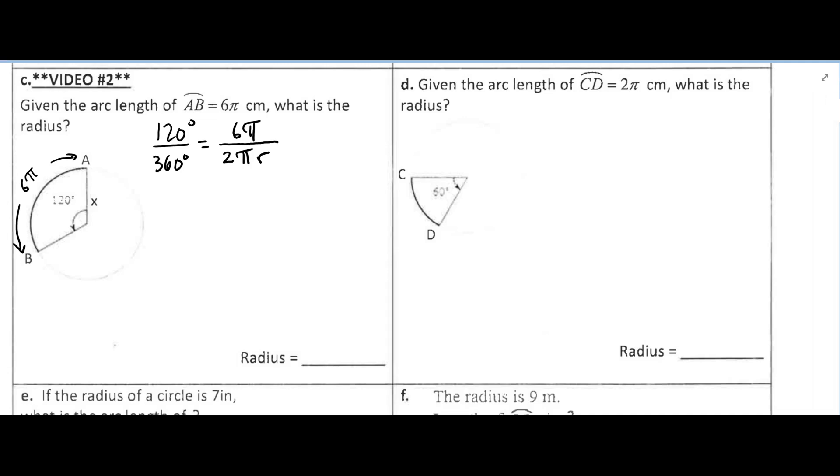And then we need to solve for R. So we're going to cross multiply. Actually, I'm going to reduce first, so 120 out of 360 is 1 third, and that's going to equal, actually these π's cancel out too, π in the numerator and π in the denominator, so those cancel each other out. So that's going to be 6 over 2R.